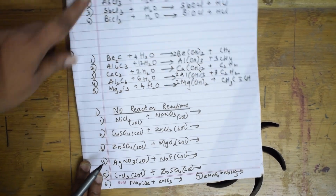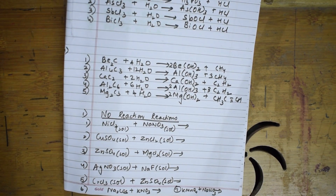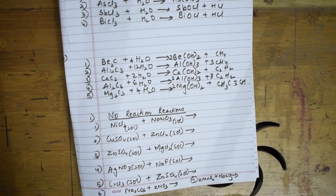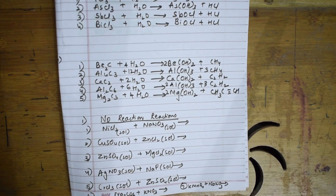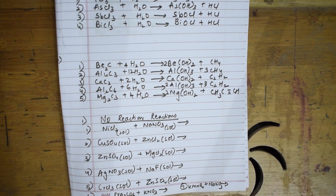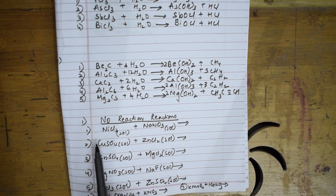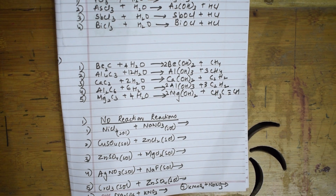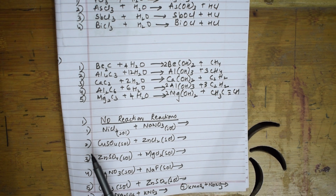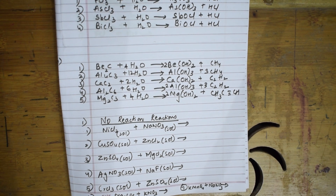There are certain reactions which do not form any products due to differences in reduction potentials in the electrochemical series. The less reactive metal cannot replace the more reactive metal. I have listed out these no-reaction cases — keep noting them as they are important.